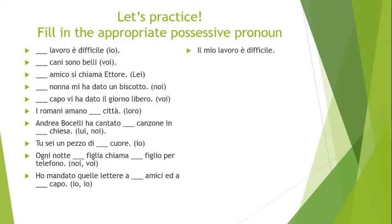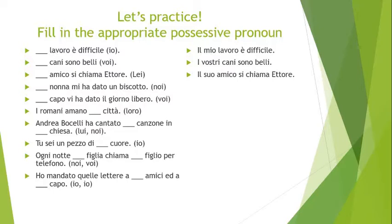The first one: 'io' — il mio lavoro è difficile. 'My job is hard' — which is true, by the way. Next: 'voi' — i vostri cani sono belli. I see 'cani,' which ends in 'i,' so I know it's masculine plural. Next: 'lei' — il suo amico si chiama Ettore. 'Her friend's name is Ettore.' Remember, it doesn't matter her gender — what matters is the gender of the friend.